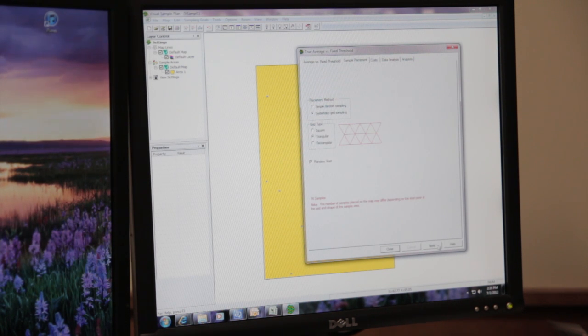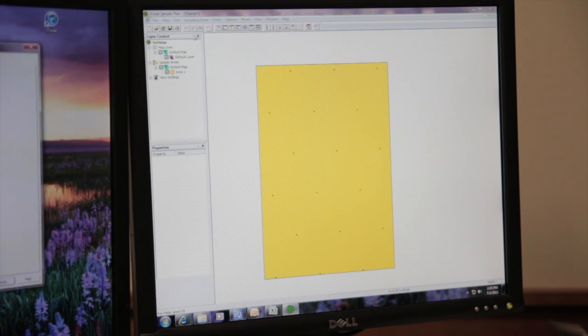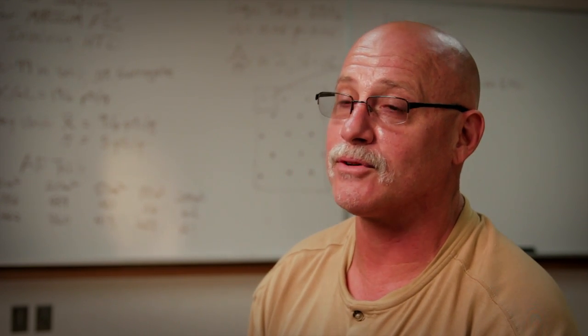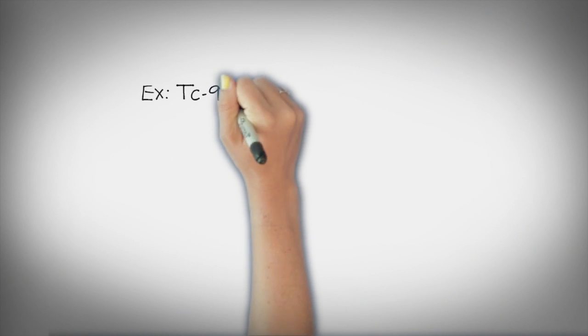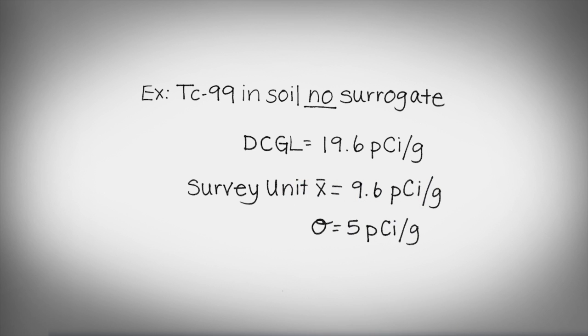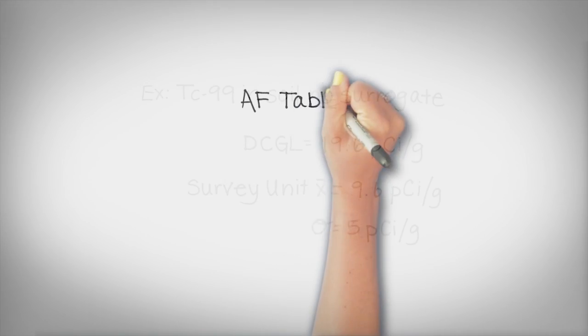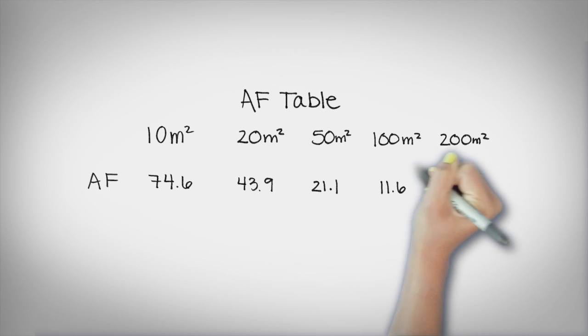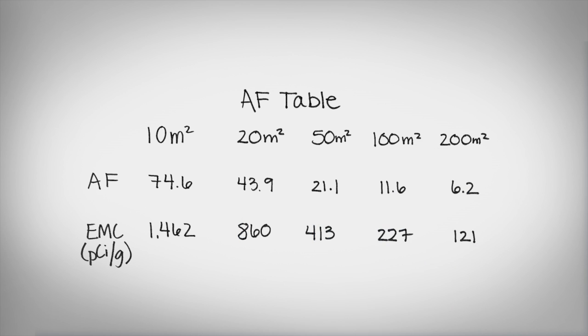Going through the data quality objectives, we have these up on the board. In our example, we're going to use Tech-99 as our hard-to-detect contaminant. We'll use the ranked set sampling approach when we have a hard-to-detect radionuclide in soil and there's no surrogate relationship available. The DCGL for Tech-99 is 19.6 picocuries per gram, established during our dose modeling. We also have an area factor table that applies to class one survey units, with DCGL EMCs for 10 square meters up to 200 square meters, which will come into play similar to a required scan MDC.